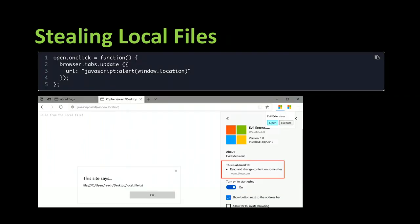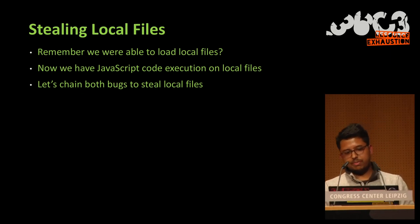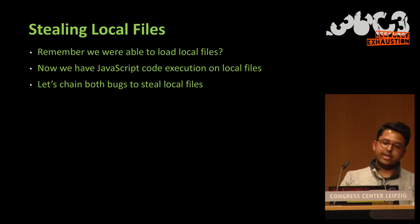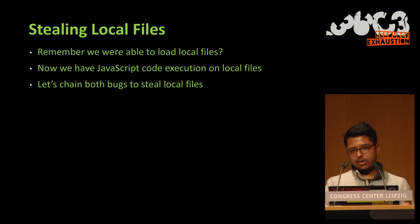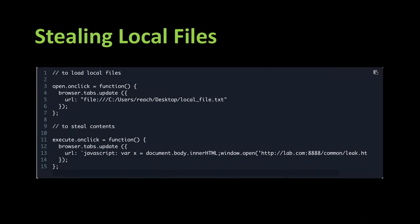This proof of concept was sent to Microsoft, along with the local file attack. I thought: now that the JavaScript URI works for domains, what if we try the same with local files? And it worked. Remember earlier Microsoft said they wouldn't fix local file loading because there's no download API? Now we have JavaScript code execution on local files as well, so we can chain both bugs to steal local files. First, browser.tabs.update pointing to a file URI, then browser.tabs.update pointing to a JavaScript URI. Microsoft decided they had to fix it.